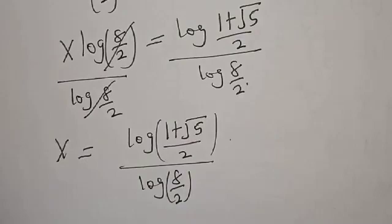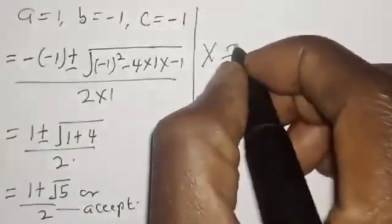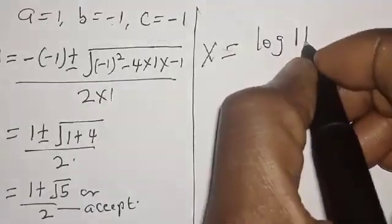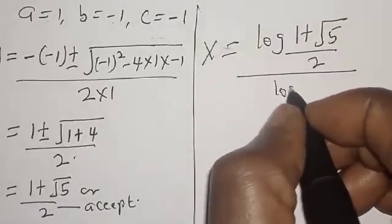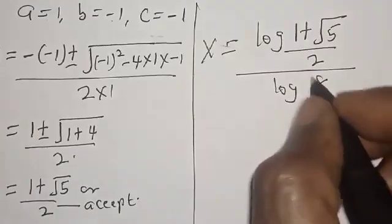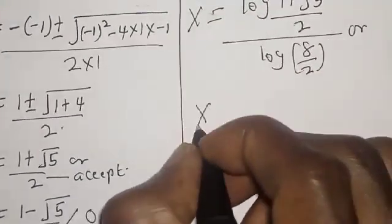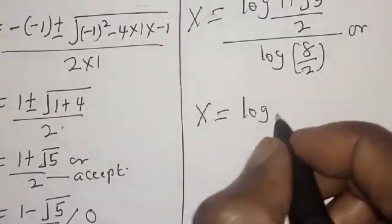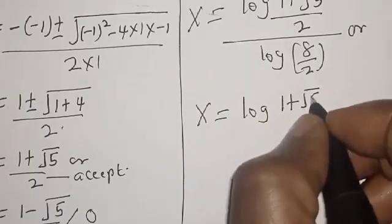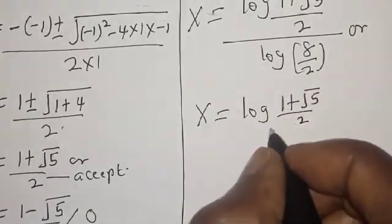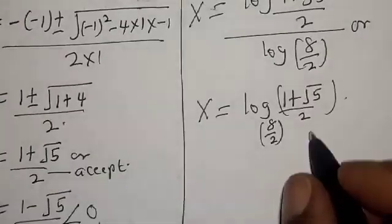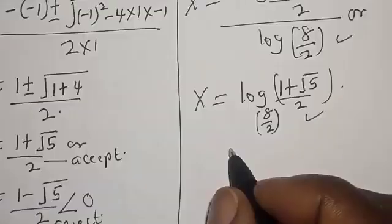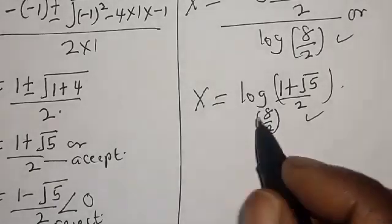Therefore our final answer is s equals log of (1 plus square root of 5 over 2) divided by log of (8 over 2). That is our final answer. If you love the class, please like, share, comment and subscribe. Thank you.